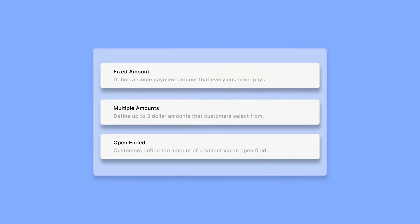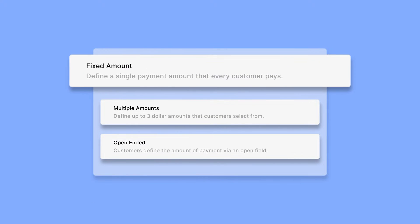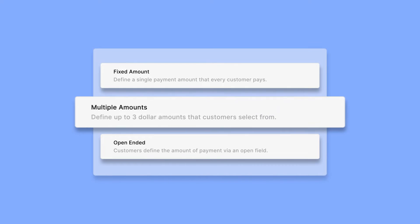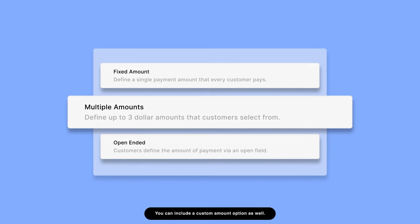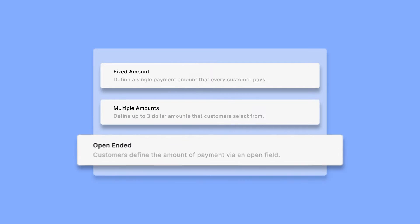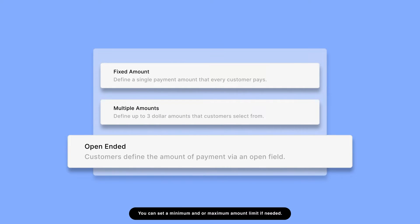Now select the Payment Type. Fixed Amount is a single amount that each customer pays. Multiple Amounts allows up to 3 amounts that customers can choose from. Open Ended allows customers to enter the amount they want to pay.